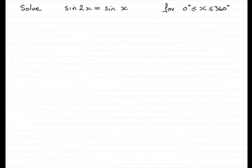Hi, welcome to this example in my series on solving trig equations. Now what we've got here is to solve sin 2x equals sin x for x between 0 and 360 degrees inclusive.